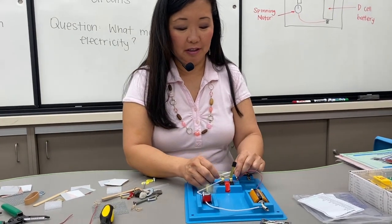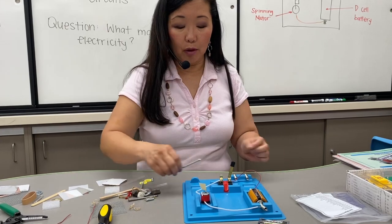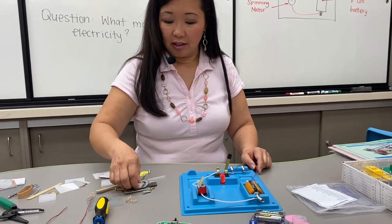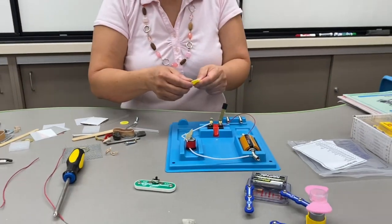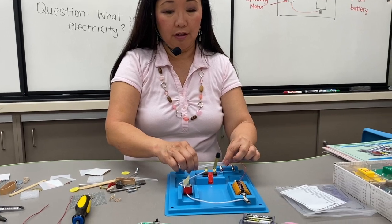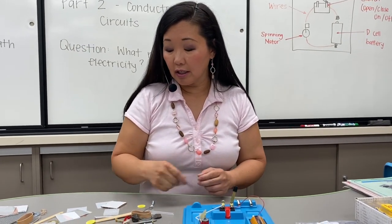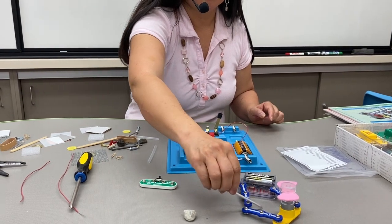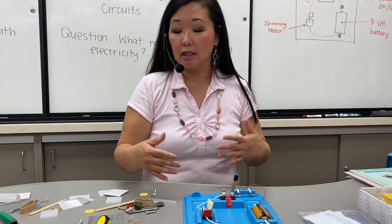Let's try the paper clip. Do you guys see a trend here of what works and what doesn't work? Let's try a rock. Let's try this little plastic chip — doesn't work. Let's try a straw. So pretty much anything that needs to work as a conductor needs to have metal in it. Except water is a big conductor of electricity, and so are our bodies — our body is made of mostly water.